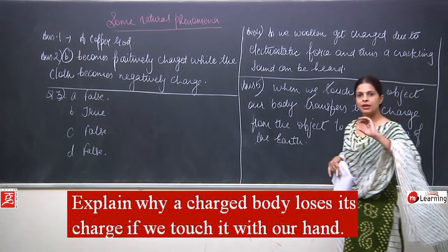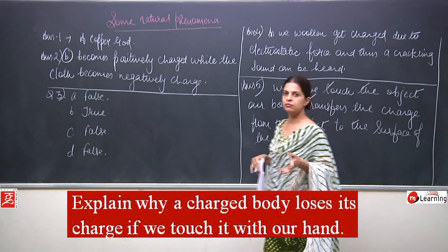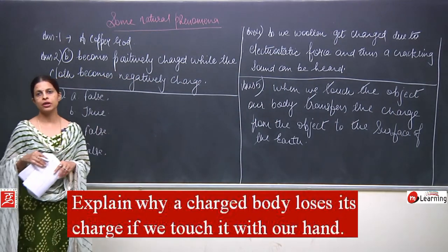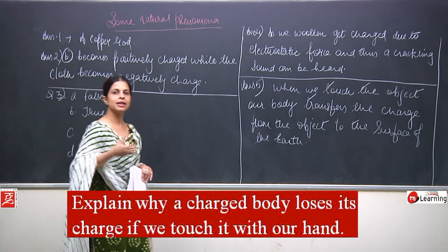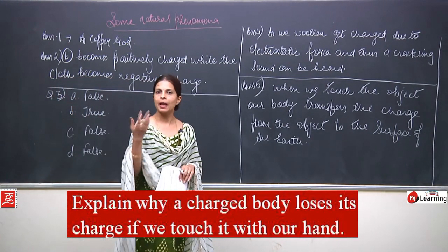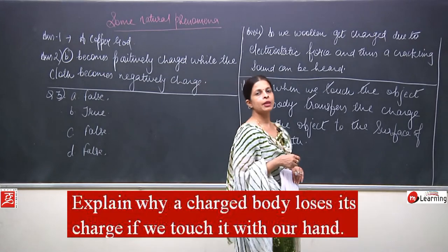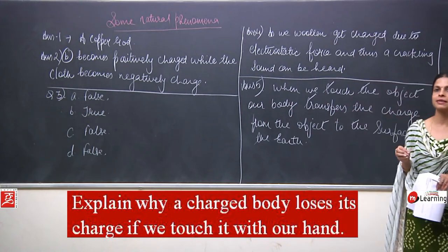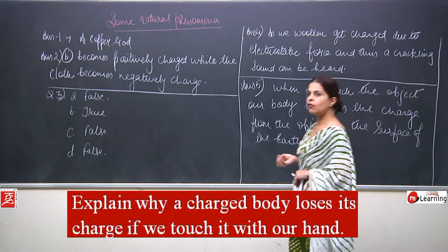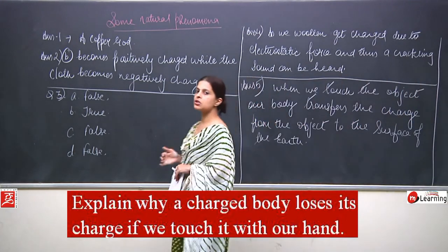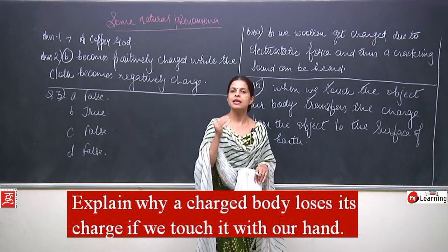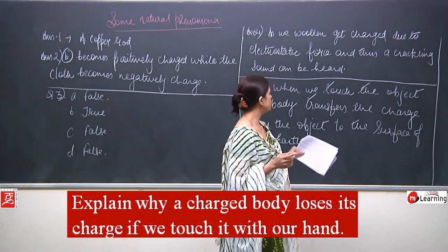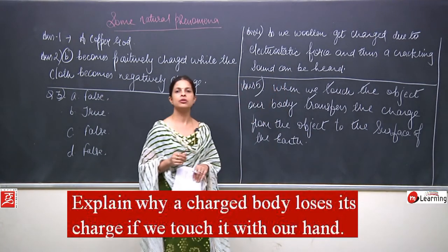We discussed two types of electroscopes — the handmade one and the one available in the laboratory. When a charged object is touched by us, the charge passes through our body to the surface of the earth, and the body becomes chargeless or gets discharged. This was all about question number 5.